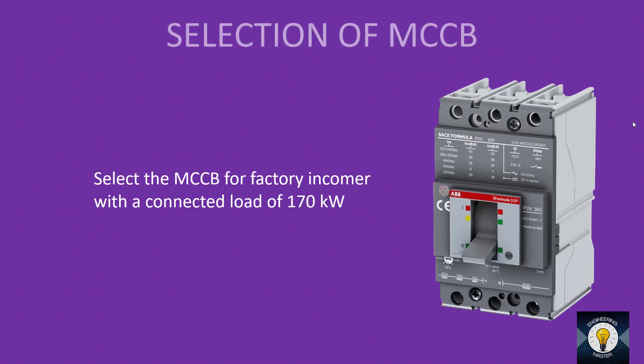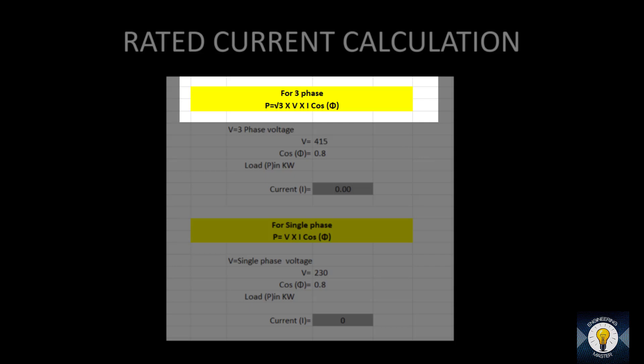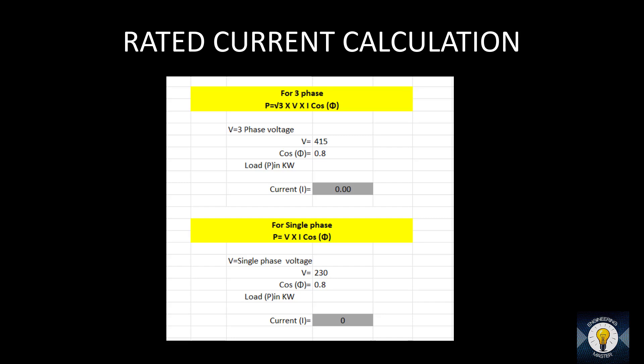The first step is calculation of rated current. For this, I have prepared an Excel sheet you can download from the description. The equation for three-phase power is P = √3 × V × I × cos φ. The power factor cos φ is 0.8, and the standard three-phase voltage V is 415 V. Entering the load of 170 kW into the Excel sheet, the current comes out as 295.98 — approximately 296 amperes.